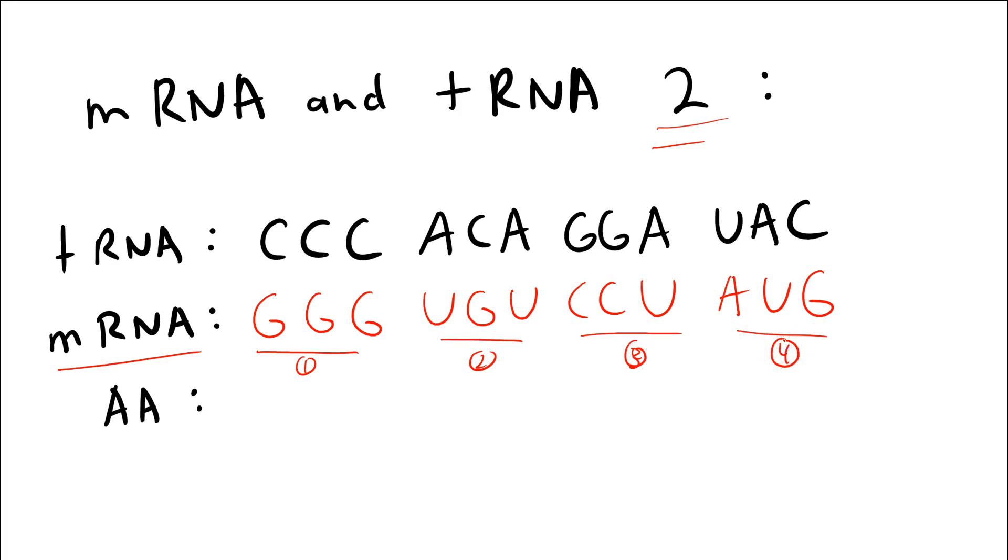What are the amino acids? Well, I'm looking at my genetic code table, GGG, that's a glycine, single letter abbreviation G. UGU is a cysteine. CCU is proline. And AUG is methionine, single letter abbreviation M. So I hope this makes sense. We're trying to emphasize the idea that this anti-codon-codon relationship is what brings the appropriate amino acid and allows that tRNA to dock, but keep in mind you always use your messenger RNA to determine that amino acid.